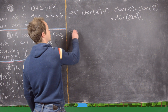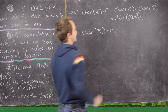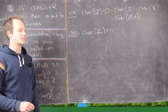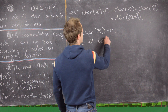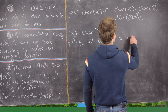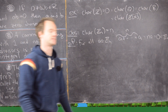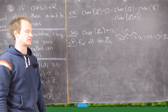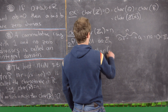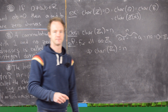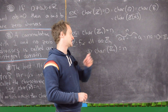We're going to make the following simple observation and do a little proof of it: the characteristic of Zₙ equals n. For all A in Zₙ, it's pretty clear that if you add A to itself n times, you get nA, which is equal to zero in Zₙ, because you get a multiple of n, and multiples of n are all zero inside of Zₙ. So the characteristic of Zₙ is less than or equal to n.